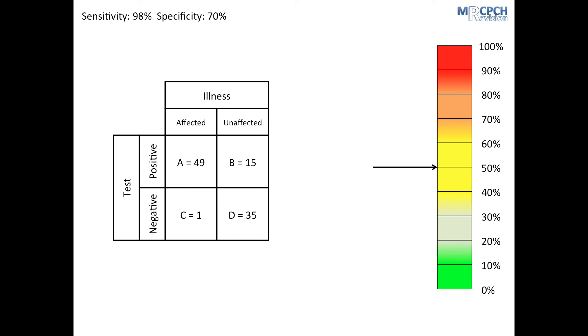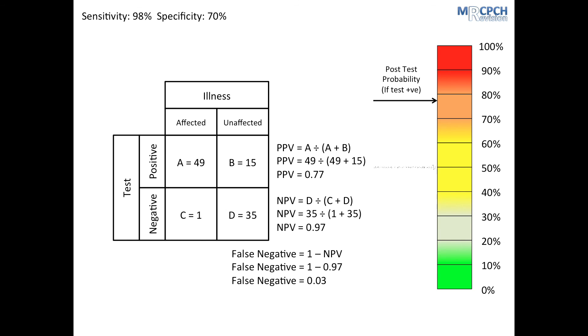Using those figures, we can work out our positive predictive value, which this time works out to 77%. Moving on, we can work out our negative predictive value, which is 97%. And using this, we can work out our false negative rate, which is 3%. So this time, a negative test result is very useful in ruling out a UTI.